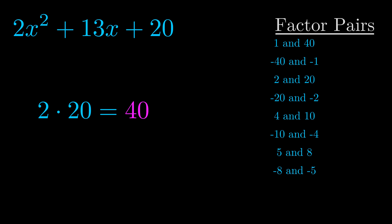The b value is the coefficient on the x term. That's the middle term, the one that we haven't done anything with yet. And really this is the only factor pair that we need.